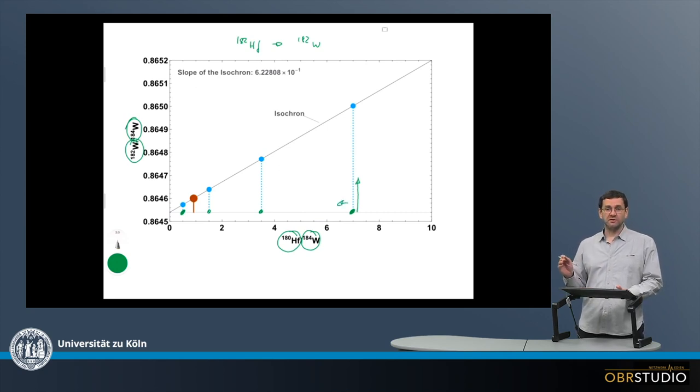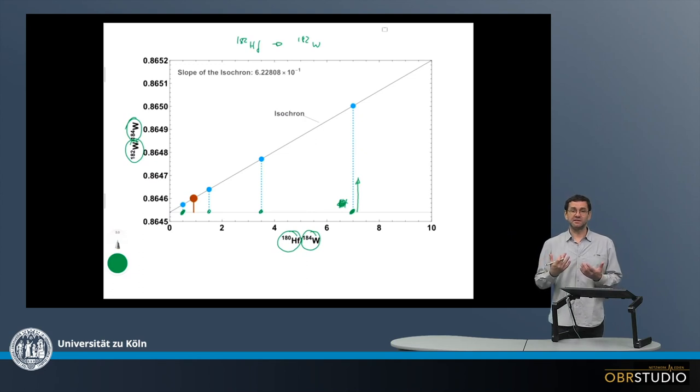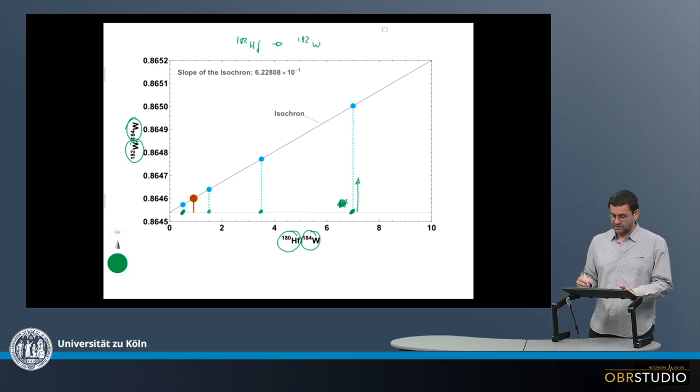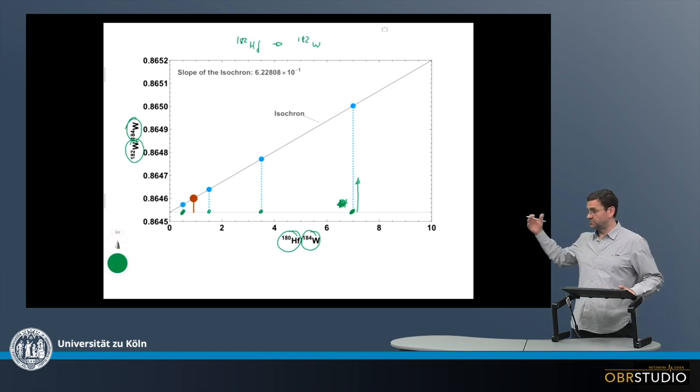But it does not move to the left, so into this direction, because although there was 182 Tungsten, we're not looking at 182 Tungsten here. So there's nothing moving to the left. This is something that's happening in isochron plots of long-lived systems, but not here. And this is the big difference between these two isochron plots.